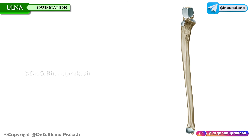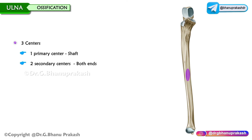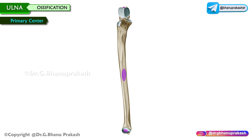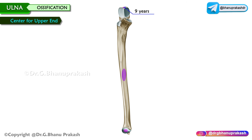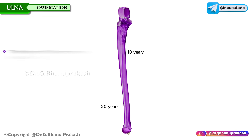Ossification. The ulna is ossified from three centers: one primary center in the shaft and two secondary centers at both ends. The primary center appears in the middle of the shaft during the 8th week of intrauterine life. The center for the upper end appears at 9 years and fuses by 18 years. The center for the lower end appears at 6 years and fuses by 20 years. The distal part of the olecranon process is formed as an extension of the upper part of the shaft.